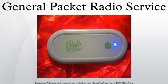2G cellular technology combined with GPRS is sometimes described as 2.5G, that is, a technology between the second and third generations of mobile telephony. It provides moderate-speed data transfer by using unused time-division multiple access channels in, for example, the GSM system. GPRS is integrated into GSM Release 97 and newer releases.